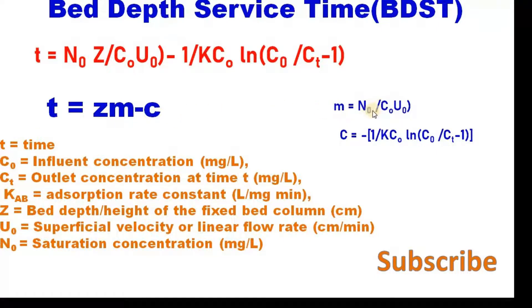Where M equal to N0 divided by C0 U0 and C equal to minus 1 by KC0 log C0 divided by Ct minus 1.